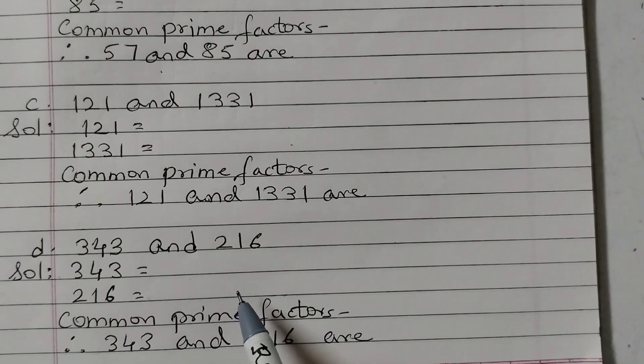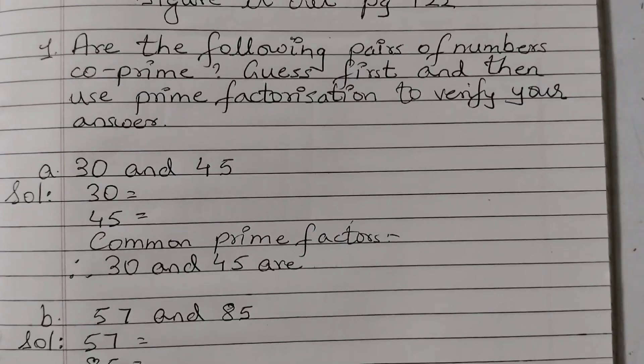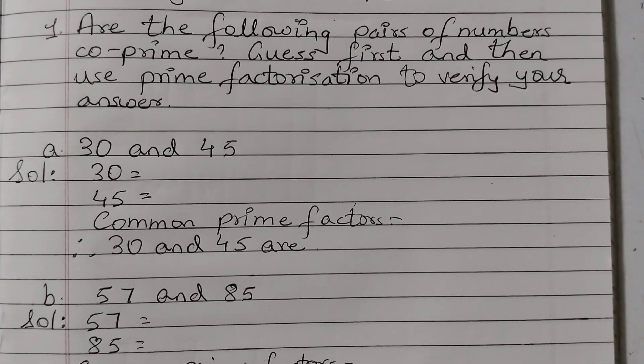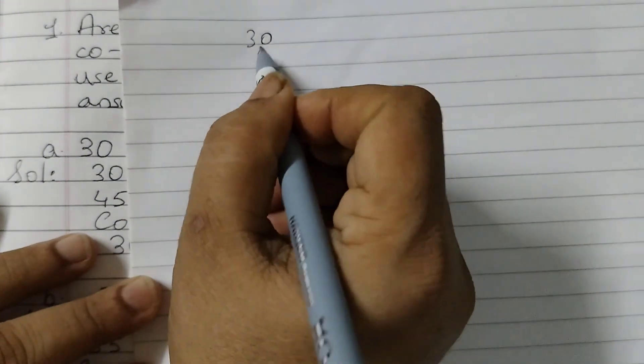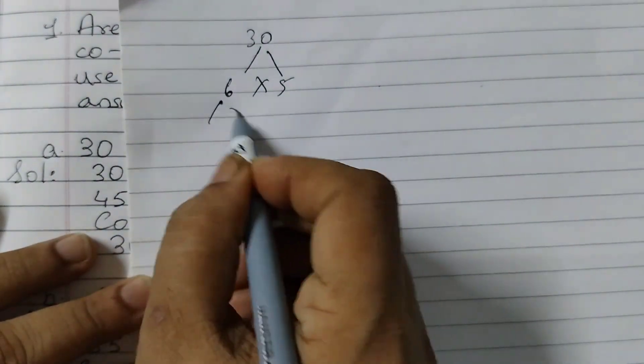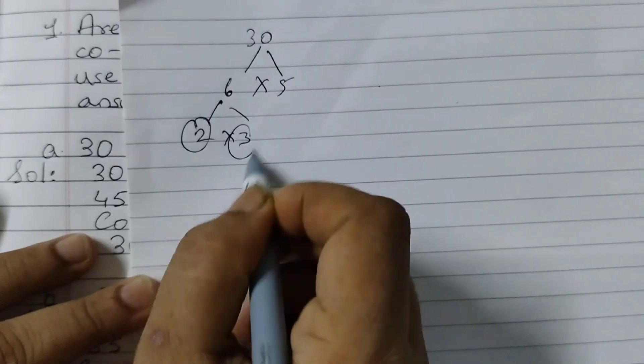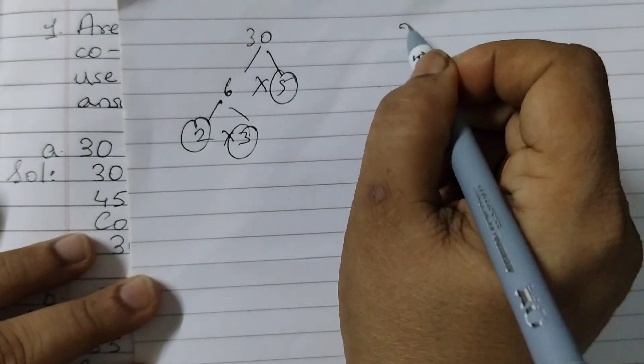So now let's do prime factorization and find out. The first pair is 30 and 45. So there are two ways you can do it. One way would be to write 30 like this and then 6 into 5 is 30. 2 into 3 is 6. So 1, 2, 3. This way you can do it or you can do it like this.